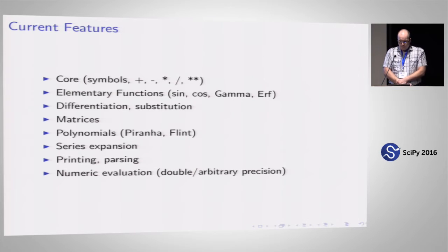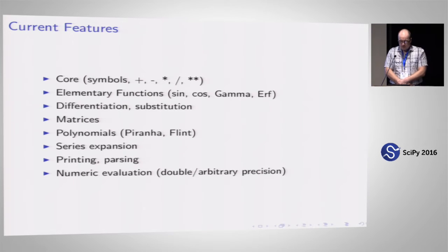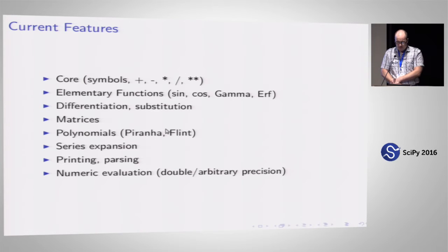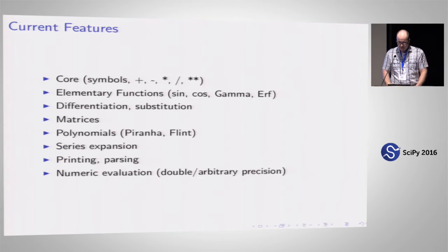So what can SymEngine do? It has the usual symbolic manipulation features: addition, multiplication, symbols, elementary functions, and some special functions. It has differentiation, substitution, and matrices. We have polynomials, and we mainly call specialized polynomial libraries — one called Piranha for multivariate polynomials very efficiently, and Flint for univariate polynomials. It can do series expansion, printing, parsing, and numerical evaluation in double and arbitrary precision.